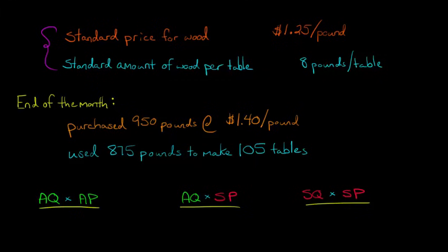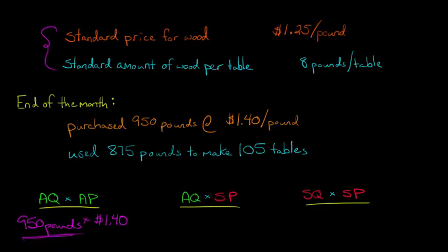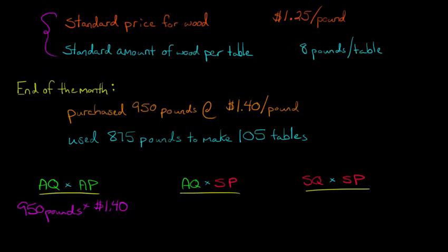Let's start with the column on the far left and compute our first variance. Our actual quantity is 950 pounds — so 950 pounds times the actual price of $1.40. You might ask why we use 950 and $1.40: because we're ultimately going to compare this column to the middle column to get our price variance, and we need to know the actual amount of wood we bought and the actual amount we paid for it. So: 950 pounds at $1.40 a pound equals $1,330.